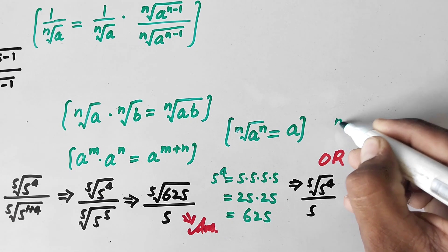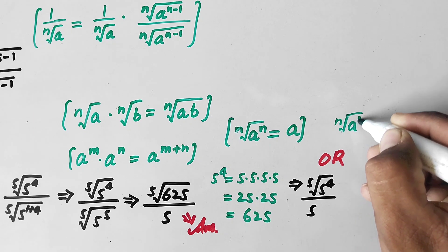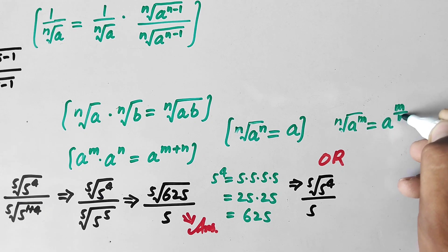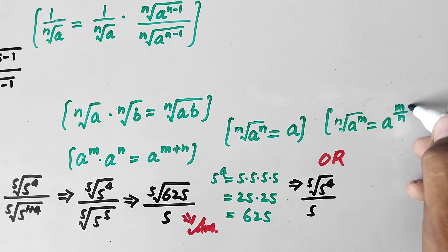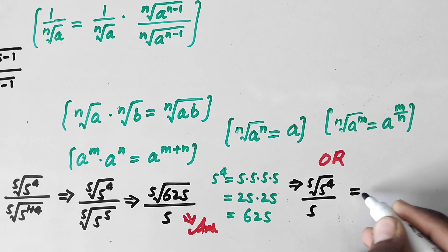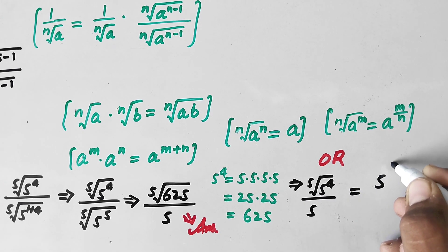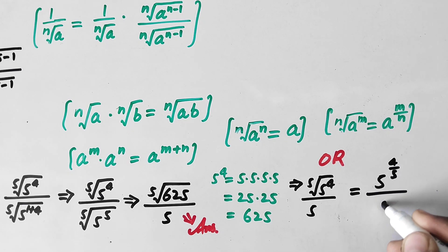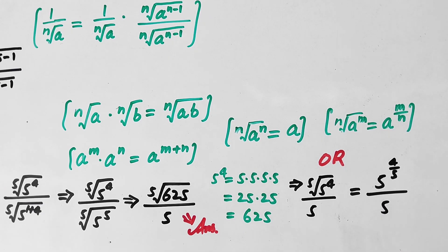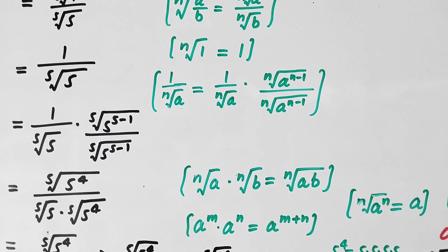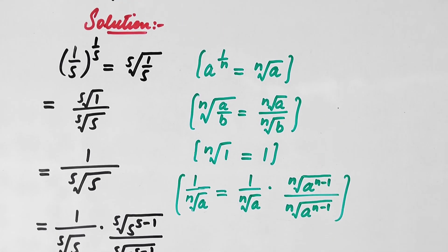Alternatively, we can express the answer using the radical property that the nth root of a^m equals a^(m/n), giving 5^(4/5) divided by 5 as the final answer. If you liked the video, please subscribe to the channel for more amazing videos. Thanks for watching — take care, bye!